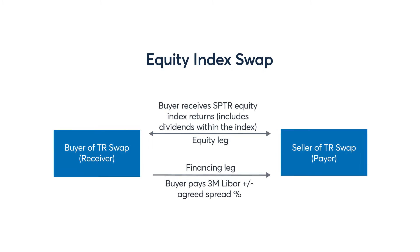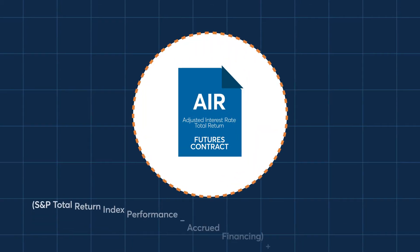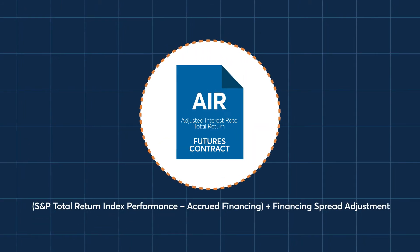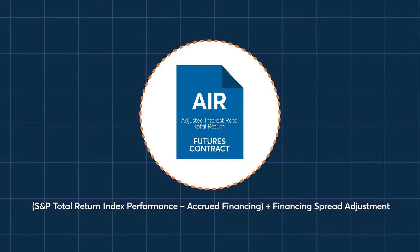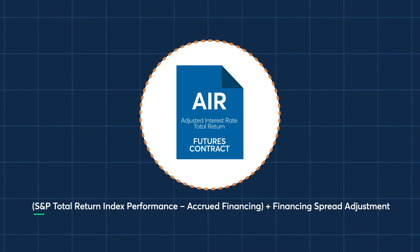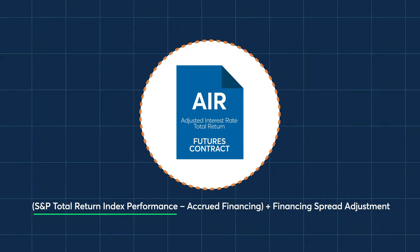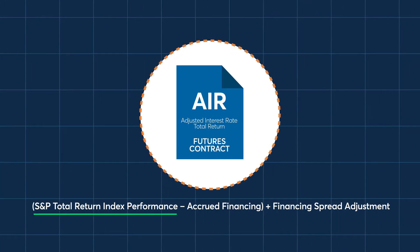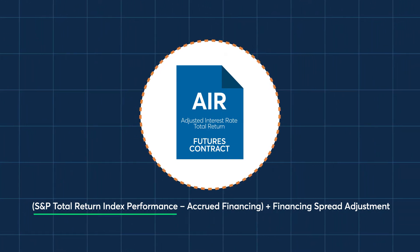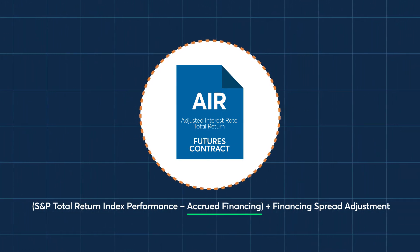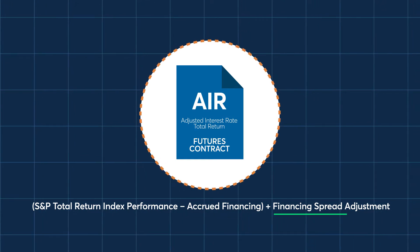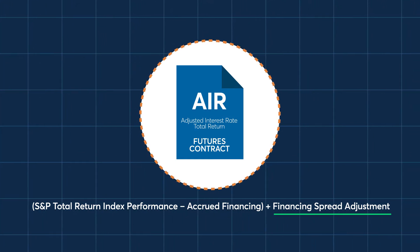As a refresher, AIR Total Return Futures are comprised of three components: the S&P 500 Total Return Index performance, the daily accrued financing, and the financing spread adjustment.